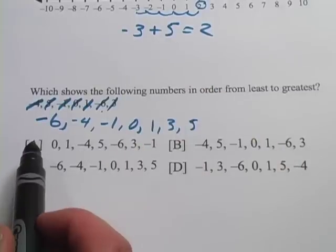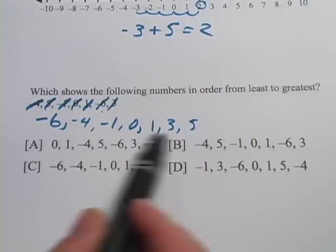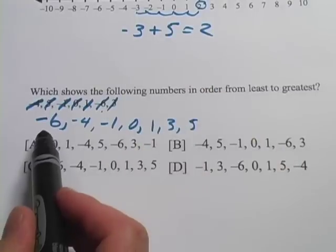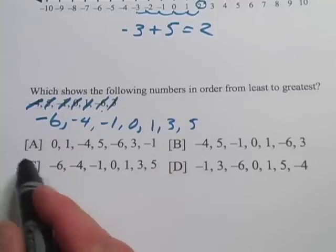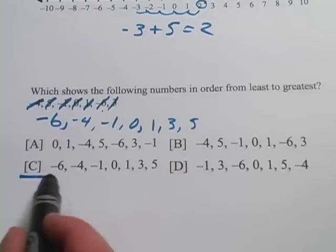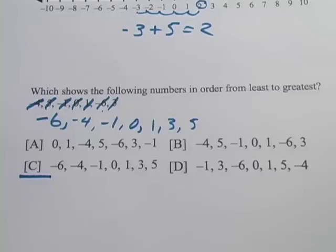So those are the numbers ordered from least to greatest. Negative 6 is the smallest one in this group. Positive 5 is the largest one. So I guess our answer here would be C. So that's a little bit about the number line and negative numbers.